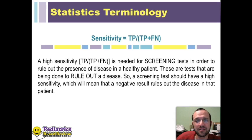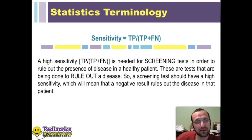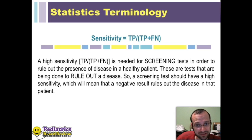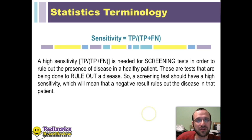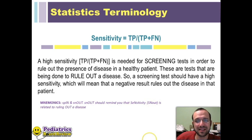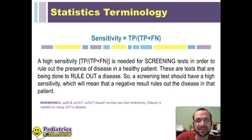The idea is that you want the number of your false negatives to be as low as possible. If you look at the denominator, a low false negative value will leave you with a fraction as close to one as possible — your true positives over your true positives with the addition of a very small number of false negatives. A screening test should have a high sensitivity so that you can rule out the disease — sensitivity, snout, meaning you're ruling out the disease with sensitivity.